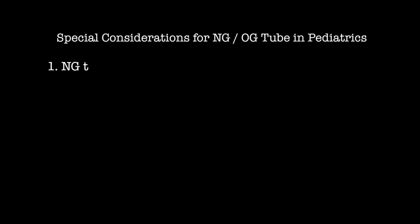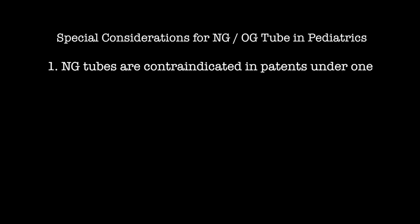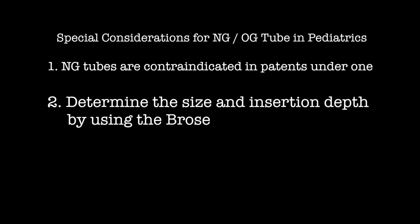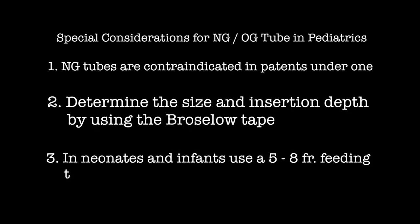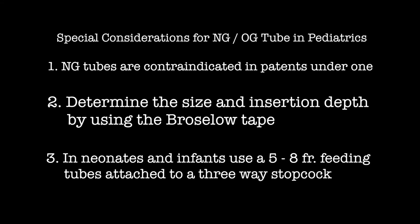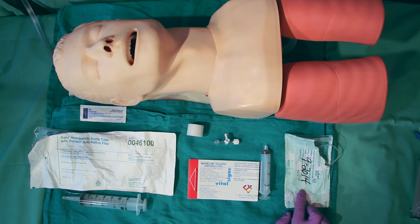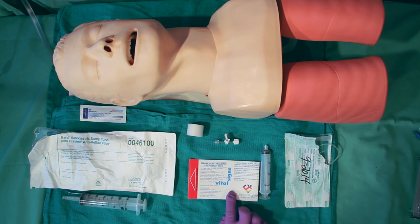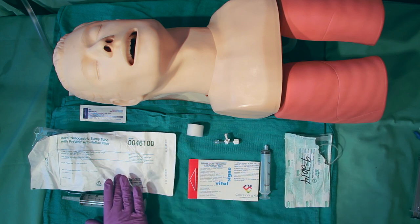There are special considerations for NG-OG tube insertion in pediatrics. NG tubes are contraindicated in patients under one year of age. You should always determine the size and insertion depth of the tube by using the Broselow tape. In neonates and infants, use a 5 to 8 French feeding tube attached to a three-way stopcock instead of the full-size 10 to 12 or 14 French NG-OG tube. You'll notice we have the feeding tube, the Broselow tape, and the regular NG tube on display.